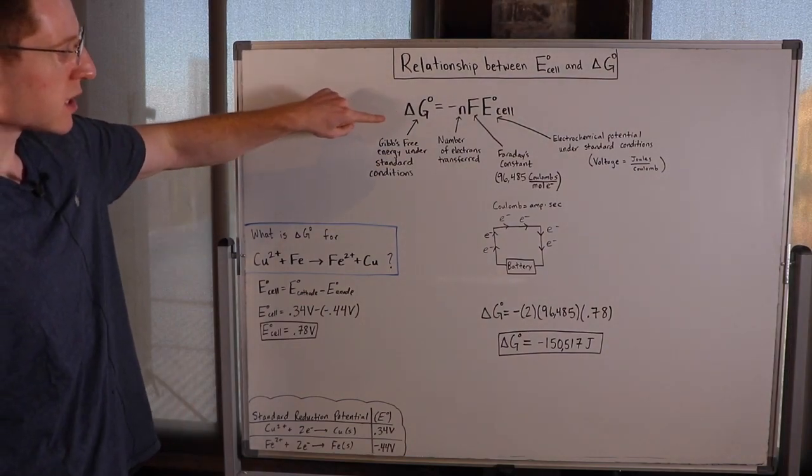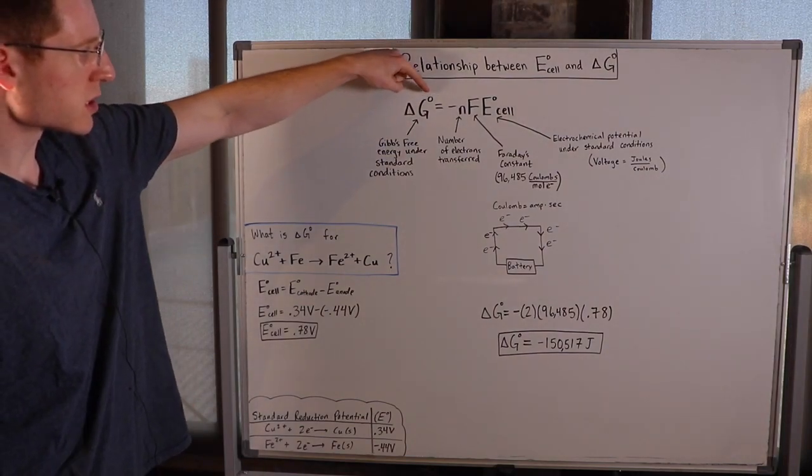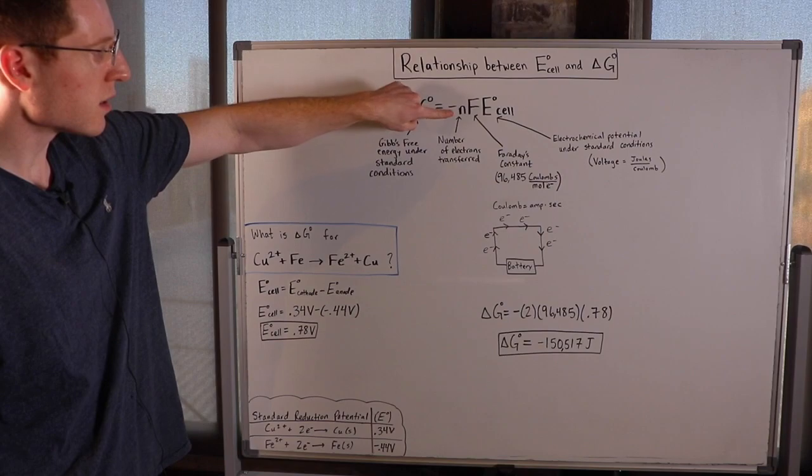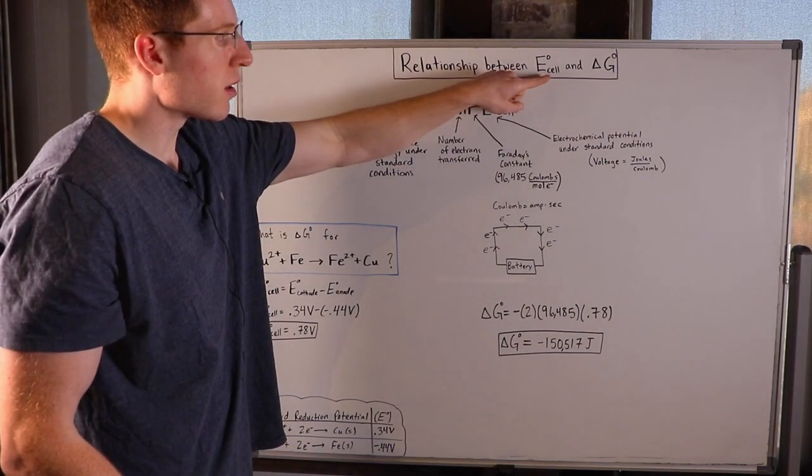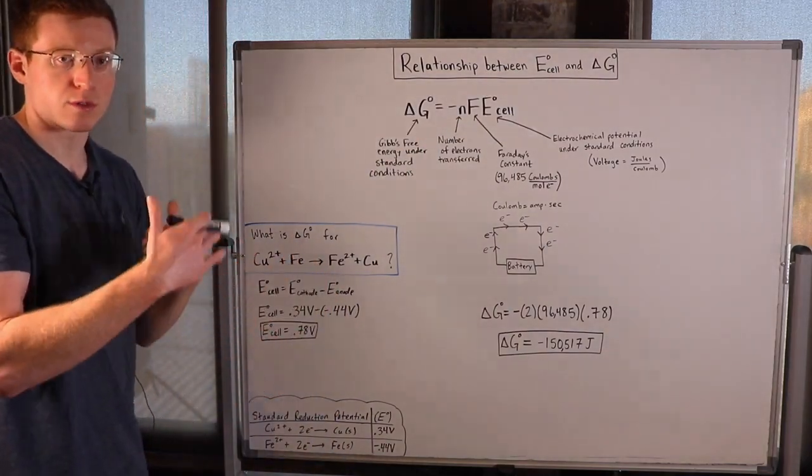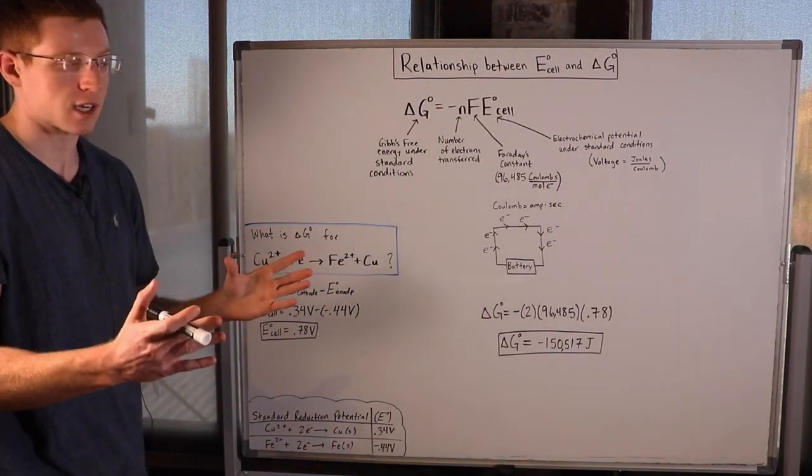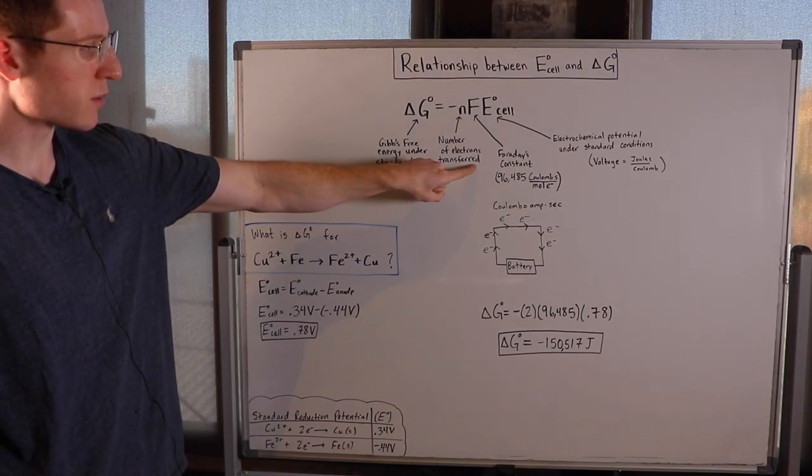So we know delta G is Gibbs free energy, and of course it's under standard conditions. The N here is the number of electrons transferred. And remember, when we're dealing with E-cell, we're talking about electron transfer reactions, or redox reactions. So that's why we're worried about the number of electrons transferred.